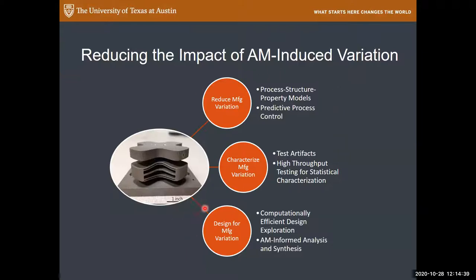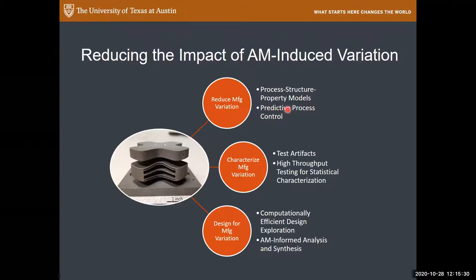There are at least three ways to address variability in additive manufacturing. One common approach is predictive process control — monitoring a process as it builds parts and feeding sensor data back into a control scheme, often with the help of AI, machine learning, or surrogate models. But there will always be some variability as we push design boundaries, so we also need ways to characterize that variation.